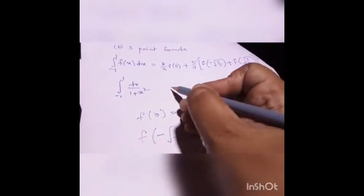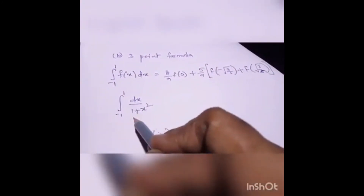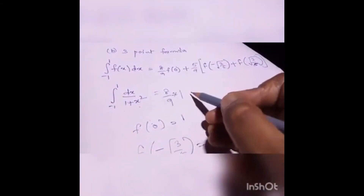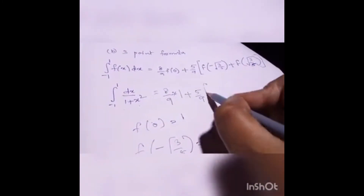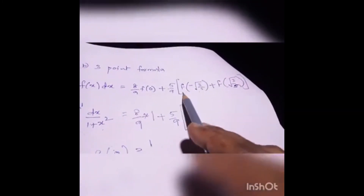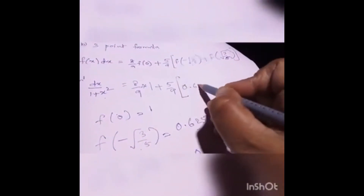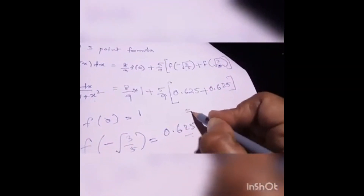Substituting into the formula: the integration of minus 1 to 1 of dx over (1 plus x squared) equals (8/9) times 1 plus (5/9) times 0.625 plus 0.625. Calculating, we get the approximation 1.5833. So this is the solution using the three-point formula.